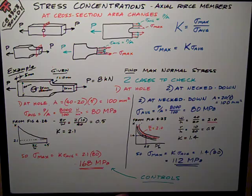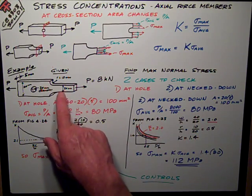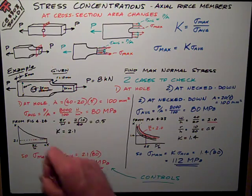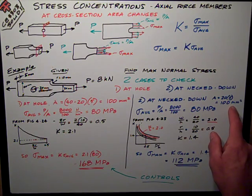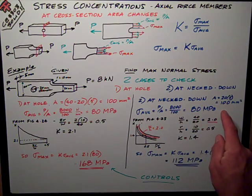Now I have to check my neck down section. Same thing, it just happens to be the same area, 20 millimeters times 5 millimeters thick, 100 millimeters squared. Sigma average is still the same thing, 80 megapascals.